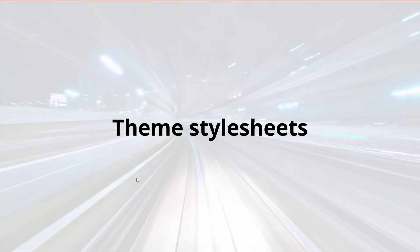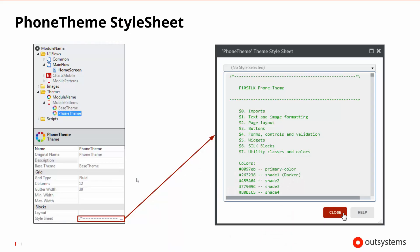How would we get to see the style sheets that are helping define our theme? Since our module is based on the phone theme, we can get to the phone theme's style sheet relatively easily by double-clicking on the style sheet. It would open in the style sheet editor and show us what the phone theme looks like.